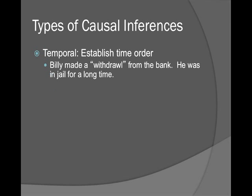Temporal cues are time-order inferences. For example: 'Billy made a withdrawal from the bank' — meaning he robbed it — 'so he was in jail for a long time.' This establishes that he had to rob the bank first and then goes to jail — unless we're talking about Minority Report.